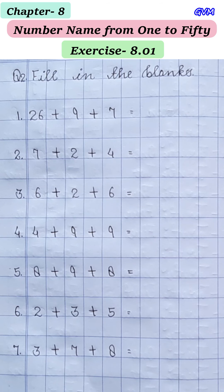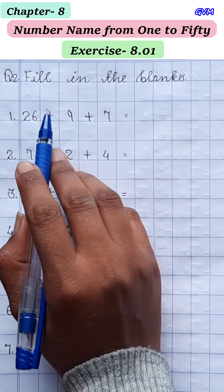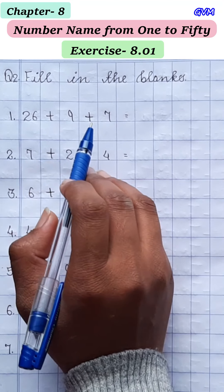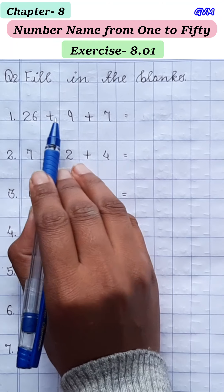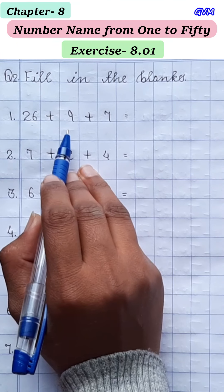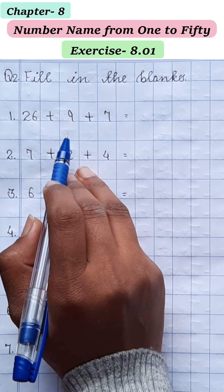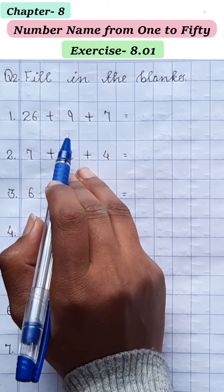Now we have second question: fill in the blanks। आपको blank में fill करना है। यहाँ पर addition के signs दिख रहे हैं तो इन्हें add करना है। 26 plus 9: 26 के आगे हम 9 count करेंगे — 27, 28, 29, 30, 31, 32, 33, 34, 35।